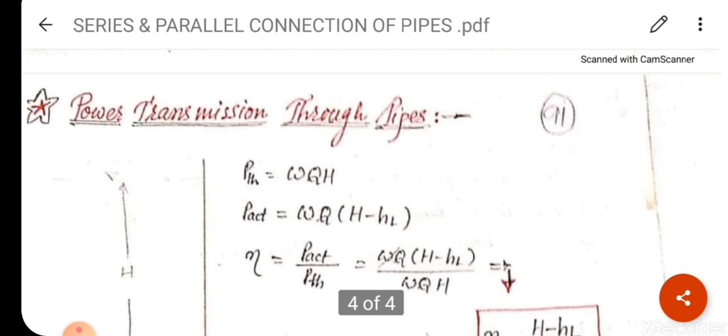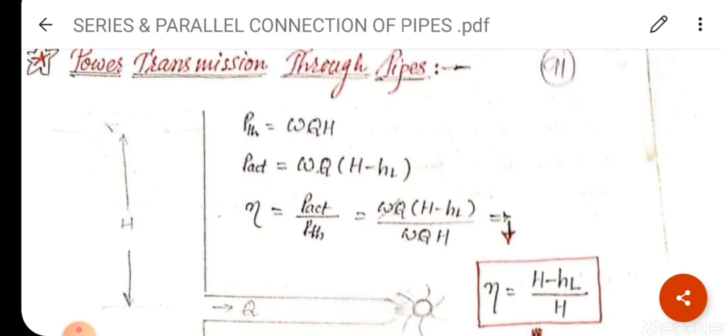Now we will discuss the final part: power transmission through pipes. Theoretical power is given as P = W × Q × H, or ρg × Q × H. Actual power is given as P_actual = W × Q × (H − HL), where HL is the head loss. So the actual available head is H minus the head loss.